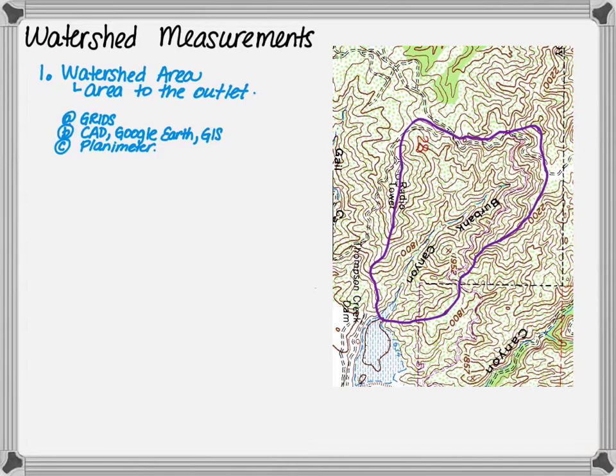Another method and more common is using computers to assist with measuring the areas. This can be done using AutoCAD, MicroStation, Google Earth, and GIS. Finally a planimeter can be used. This is a device that is used to make measurements on plan sets. This is particularly useful for quantities on old plans that are not digital. Feel free to pause the video and go to a Google search engine and type in planimeter so you could see what these look like.